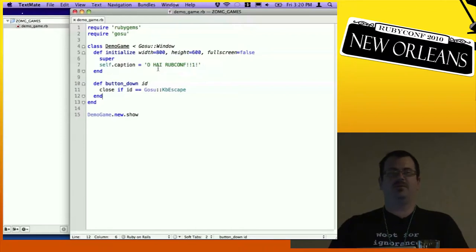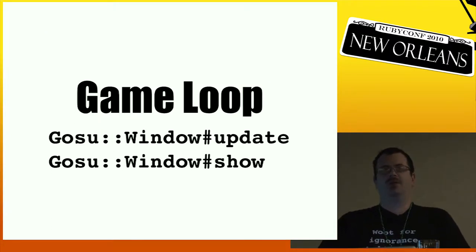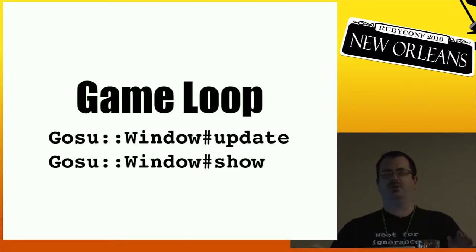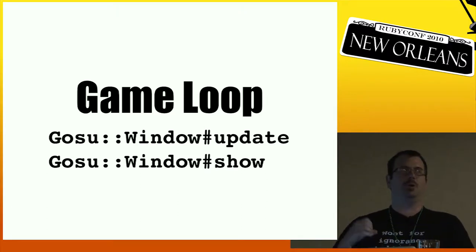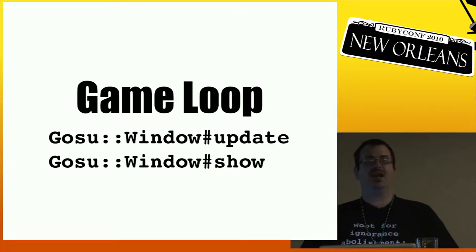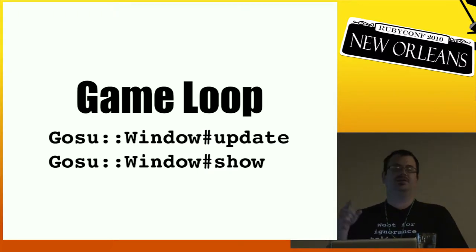The thing that's different about game development from most other desktop application development is the game loop. A lot of other desktop apps wait on user input and have a message pump they pull from — they try not to take too many resources. In a game, we don't care. We want to take as many resources as possible and go full throttle all the time. Gosu has a game loop, and every time through the loop it calls the update method and the draw method.